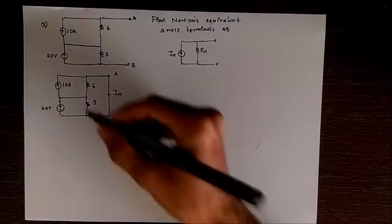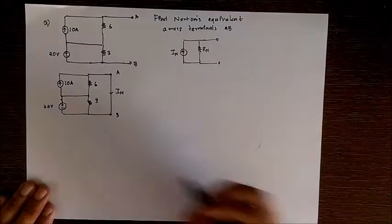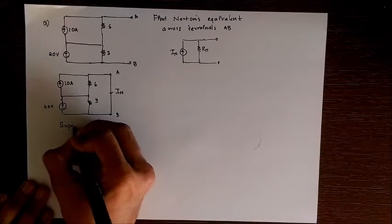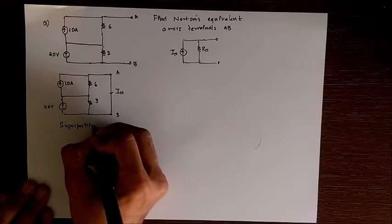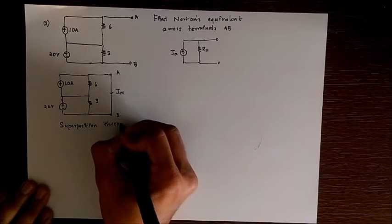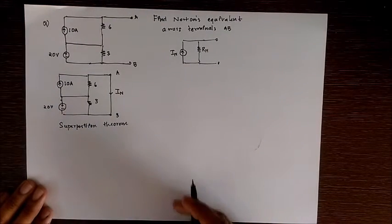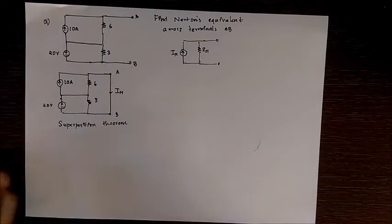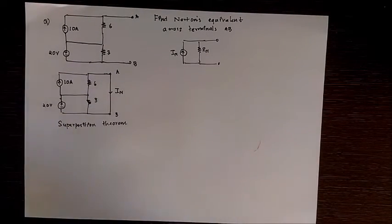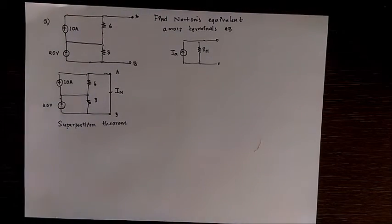So as there are two sources, I am using superposition theorem. You can also use other methods like mesh analysis. With superposition theorem, we first activate one source and find that current In with respect to that source only.